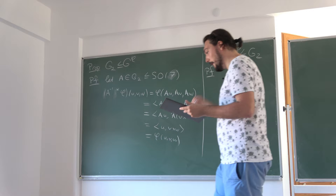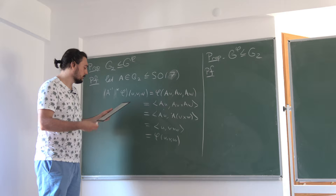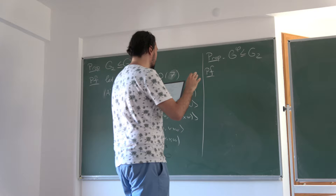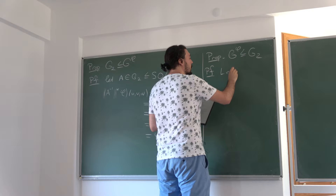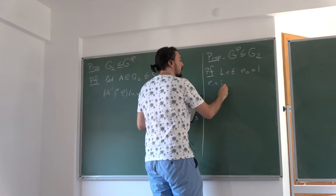Now we can show that elements of G^φ are automorphisms of the octonions. Now looking at the inner product of u with A(v cross w): by definition this is φ(u, Av, Aw). Then φ(A·A⁻¹u, Av, Aw), and because A is in the stabilizer we can remove all three A's, giving φ(A⁻¹u, v, w) = ⟨A⁻¹u, v cross w⟩. Multiplying both sides from the left by A gives ⟨u, A(v cross w)⟩ = ⟨u, Av cross Aw⟩. So A respects the cross product.